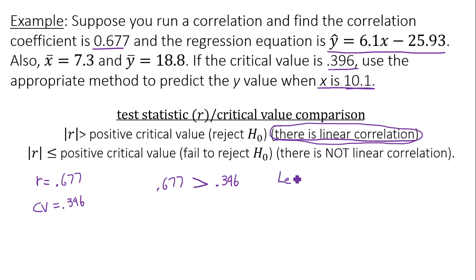So that means I'm going to let x equal 10.1 in the equation y-hat equals 6.1x minus 25.93. So my predicted y value, y-hat is 6.1 times 10.1 minus 25.93.